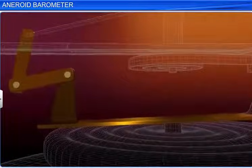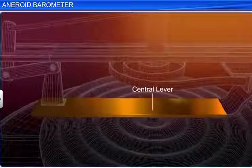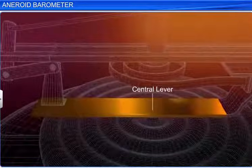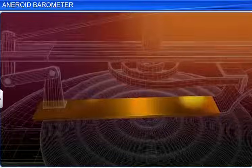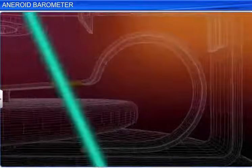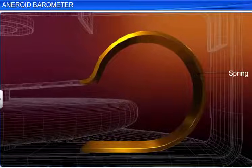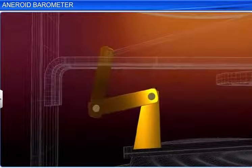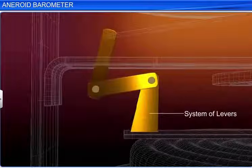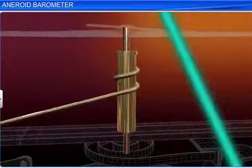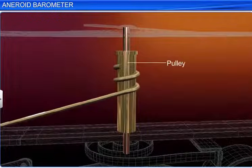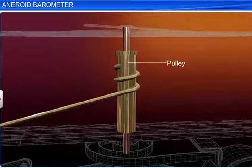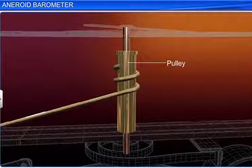The resulting movements of the diaphragm are magnified with the help of a system of levers. The central lever of the system of levers is fixed at the middle of the diaphragm. One end of the central lever is connected to a spring. The spring prevents the evacuated metallic box from collapsing. The other end of the central lever is connected to the other levers of the system. The system of levers is further connected to a chain that passes over a pulley. A pointer that moves over a calibrated circular scale is attached to the pulley.